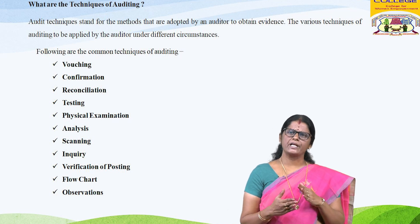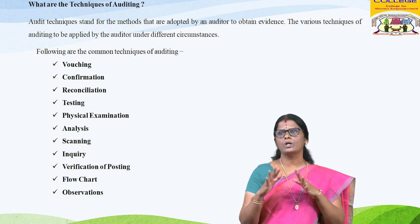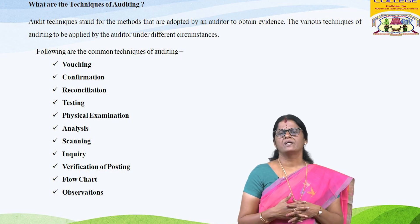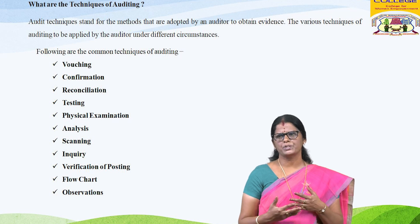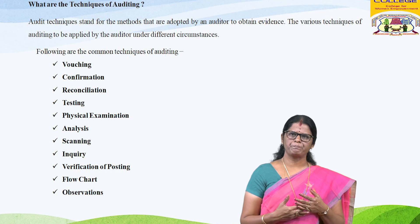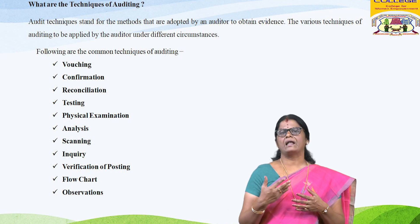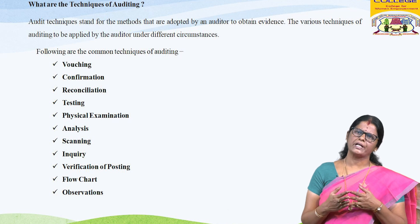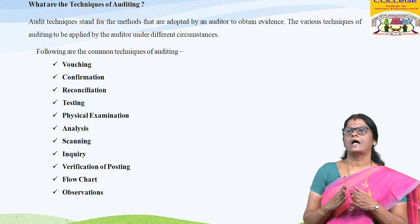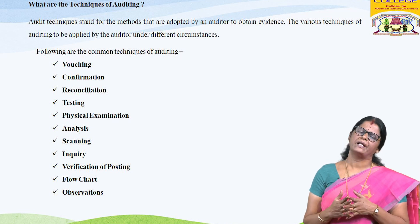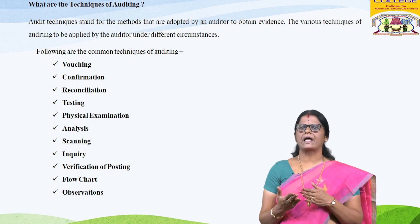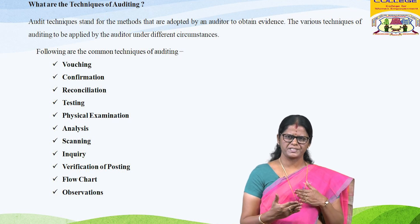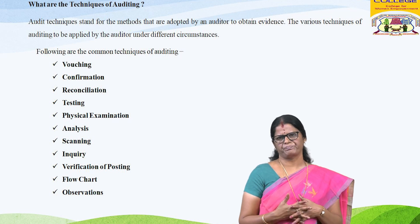Testing: a technique of selecting representative transactions from the whole accounting data to draw a conclusion about all items. Physical examination: requires verification and confirmation of the physical existence of tangible assets as appearing in the balance sheet, such as cash in hand, land and building, plant and machinery, etc. Analysis: a technique used by an auditor to segregate important facts and study their relationships. Scanning: by scanning the books of accounts, an experienced auditor can identify entries requiring his attention — also called scrutiny of accounts.